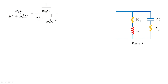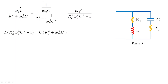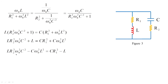Substituting XL = ω₀L and XC = 1/(ω₀C), the expression can be rearranged as ω₀C divided by (R2² ω₀² C² + 1). Cross-multiplying both sides, since ω₀ appears on both sides it cancels, giving L times (R2² ω₀² C² + 1) equals C times (R1² + ω₀² L²). Multiplying out and collecting ω₀ terms: LC ω₀² times (CR2² − L) equals CR1² − L.